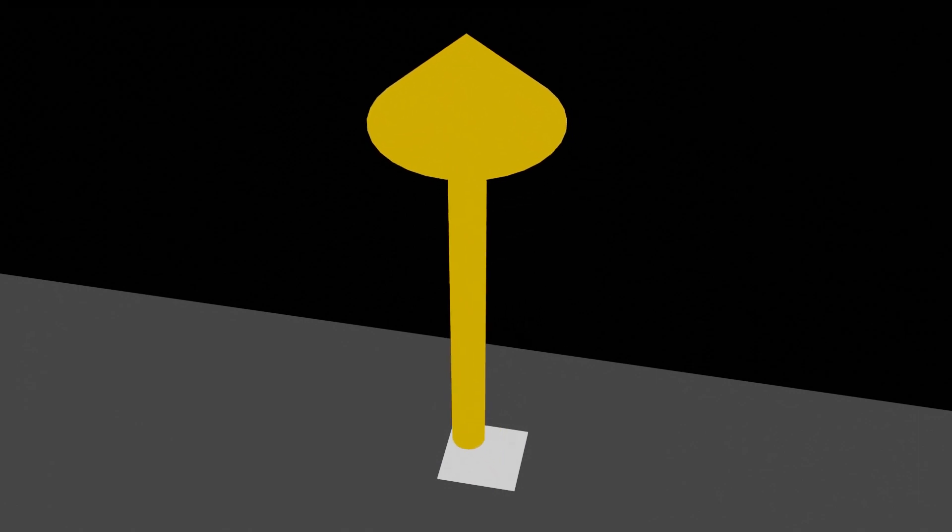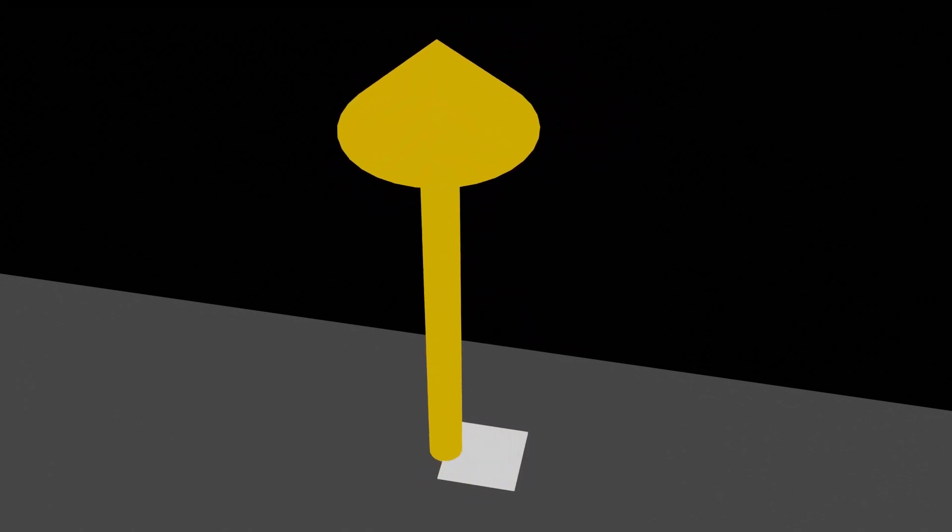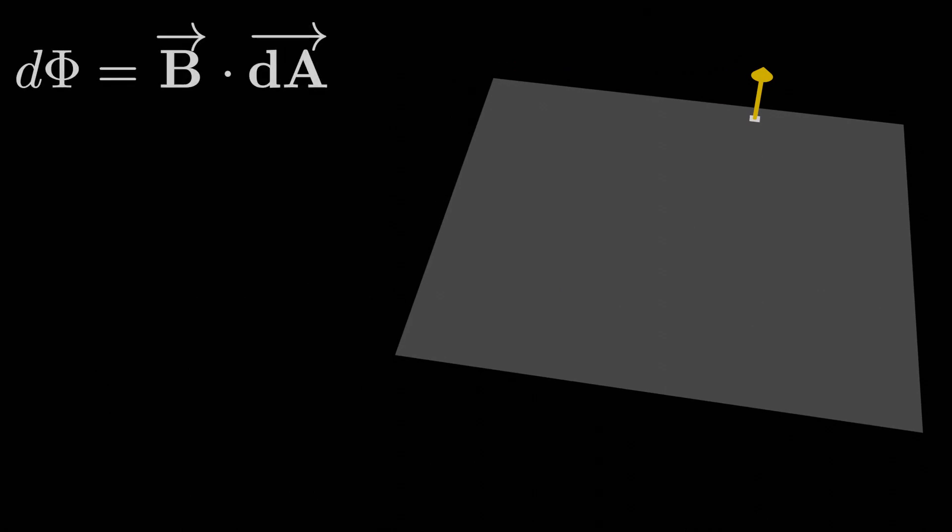The only solution is to turn this into an integral now. As long as we can define an infinitesimally small area element dA, the magnetic field will be uniform on that tiny area element if it's small enough.